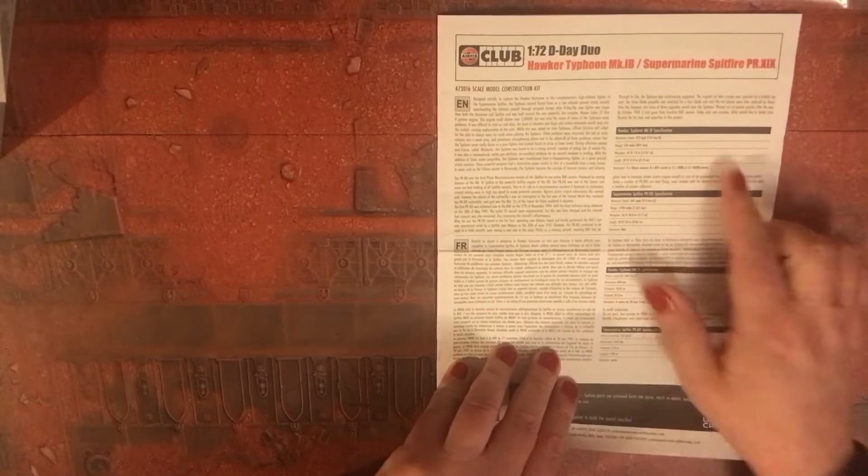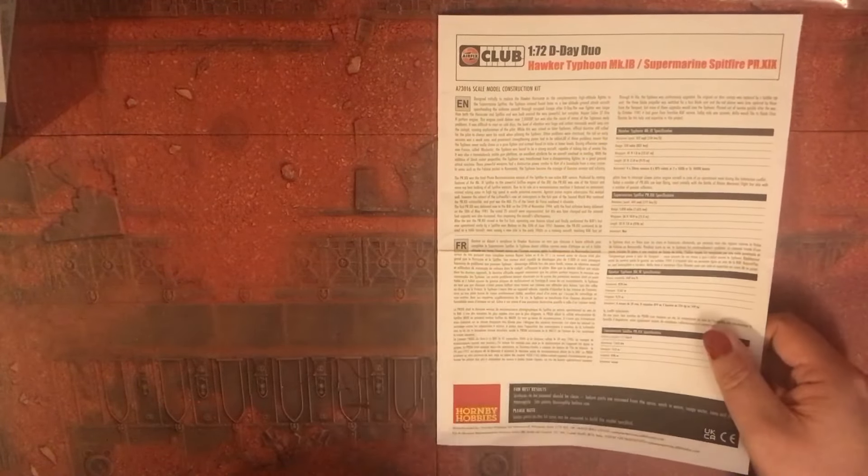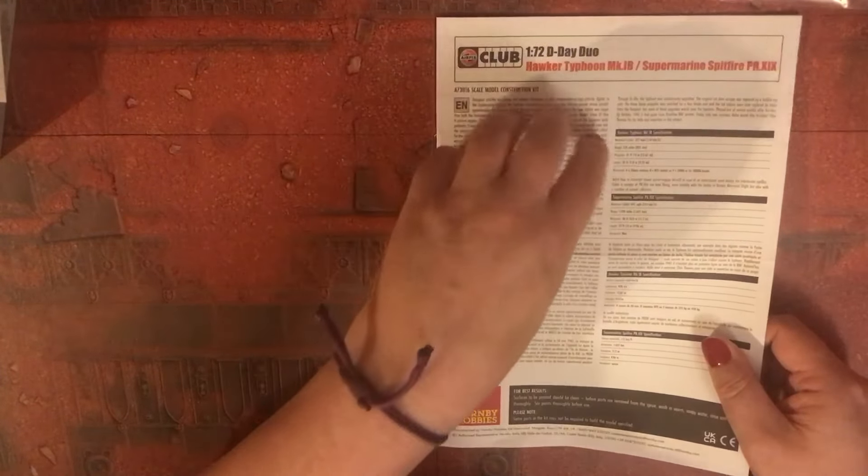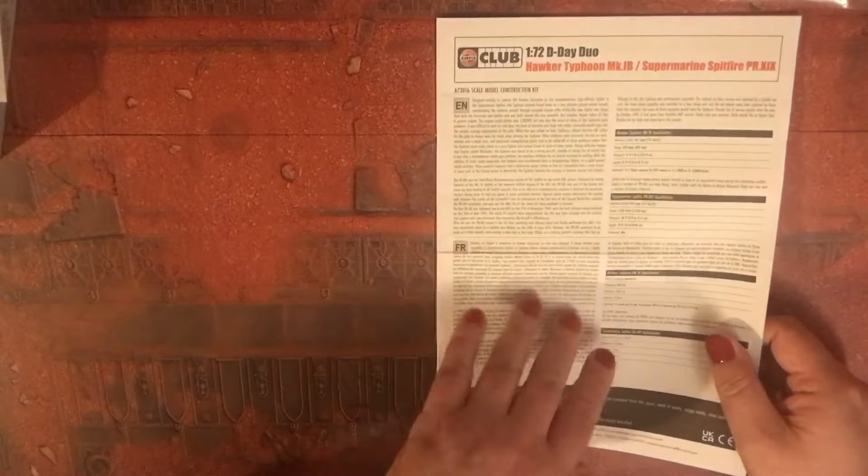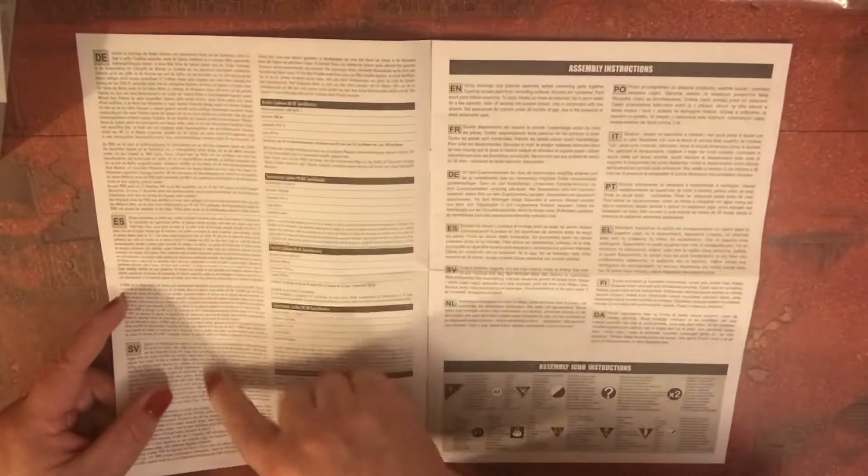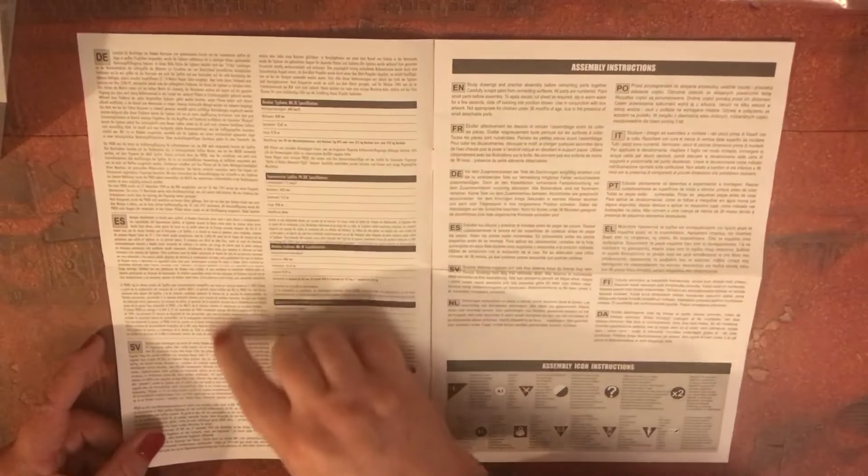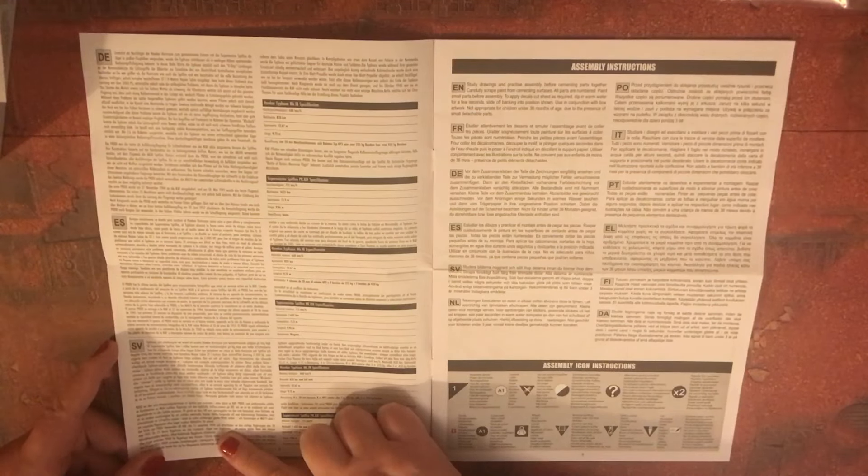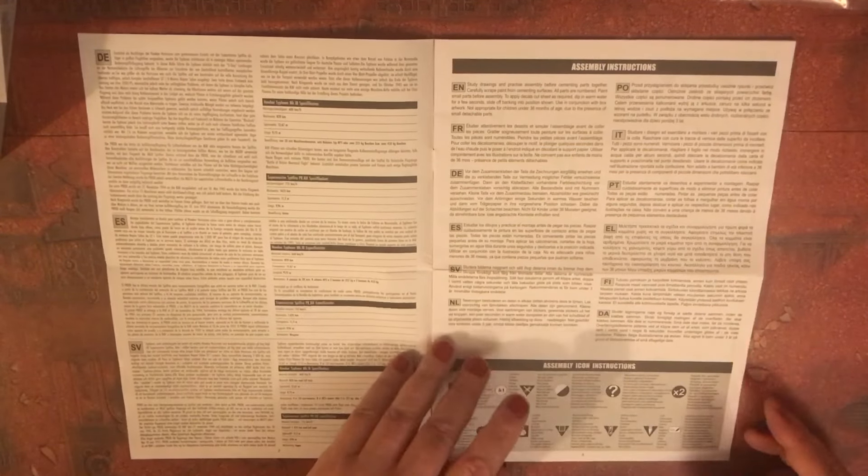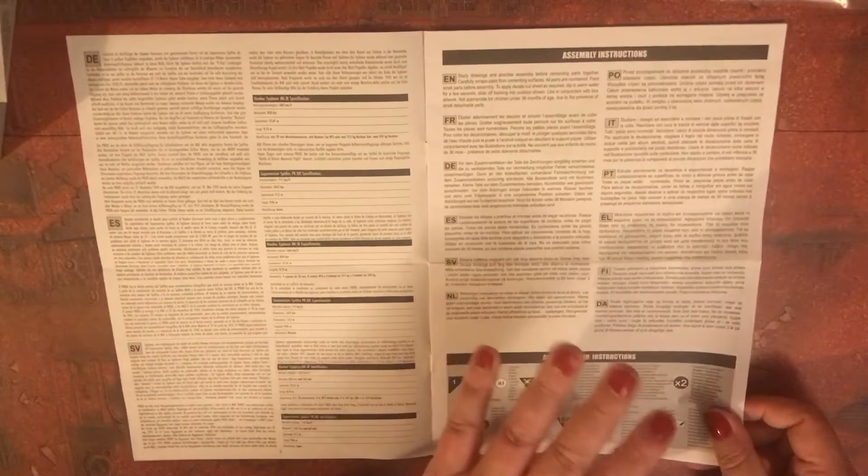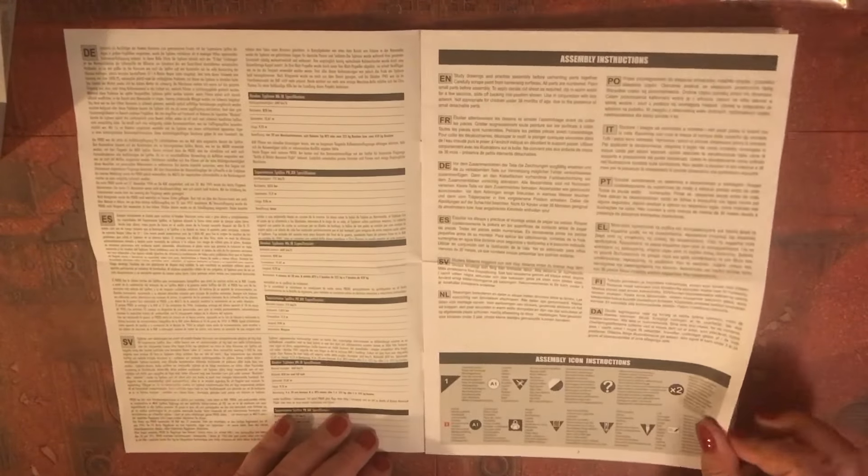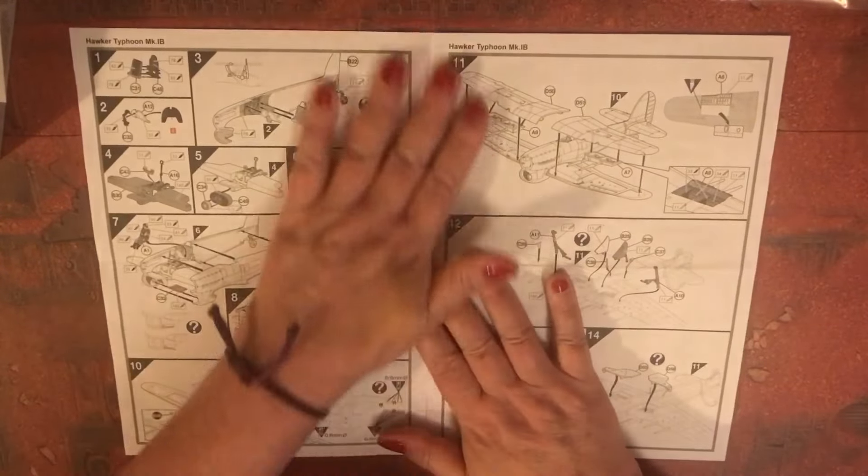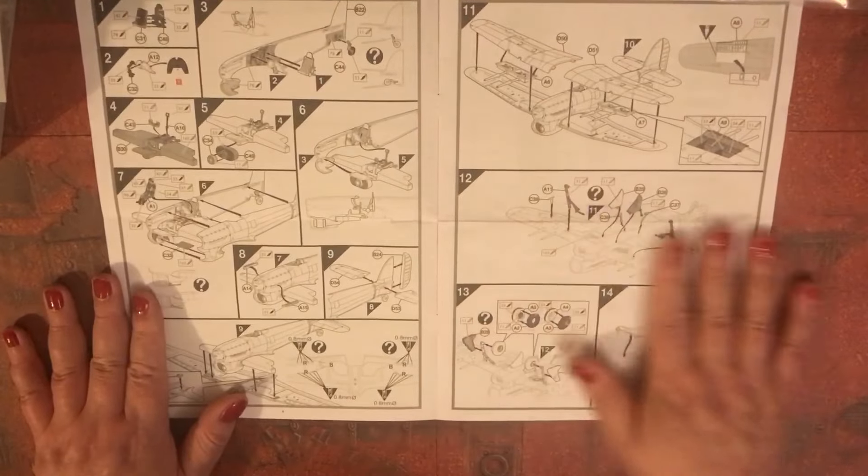Hawker Typhoon Mark 1B and Supermarine Spitfire which is photo reconnaissance 19, Mark 19. You're going to get your blurb here in English for the two aircraft, then in French and then obviously that continues in like German, Spanish and other languages. Then you get your assembly instructions in multilingual and then assembly icons that you're gonna need to refer to when building your kits.